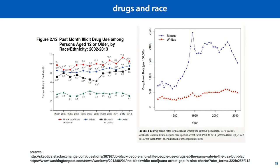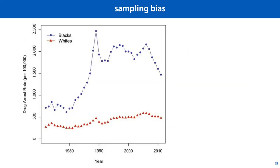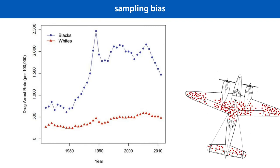One problem with an automated system like that of Northpoint is that there is a very strong risk of data not being sampled uniformly. If we start out with the arrest rate that we see on the right, then a system that predicts illicit drug use will see a lot more black drug users than white ones. Given such a data distribution, it's not surprising that the system learns to associate being black with a higher rate of drug use. This is not because of any fundamental link between race and drug use, but purely because the data is not representative of the population. We have a sampling bias. It's a bit like the example of the damaged planes in World War II we saw at the start of the fourth lecture: if we assume that our data was uniformly sampled, we will conclude the wrong thing.